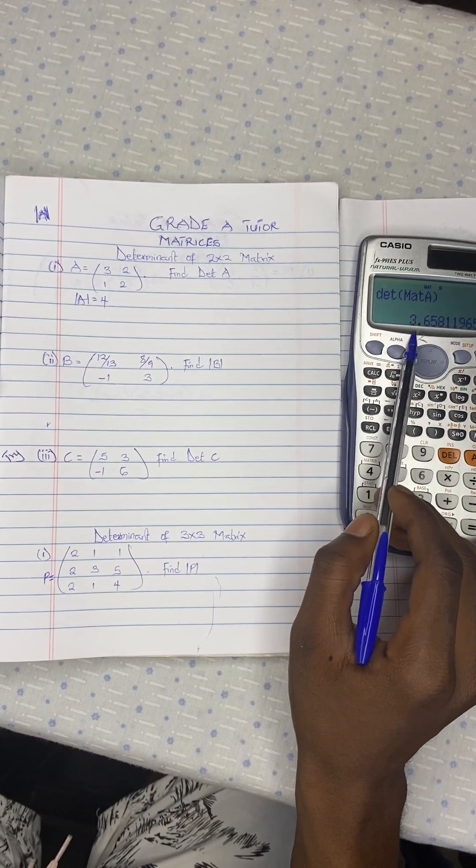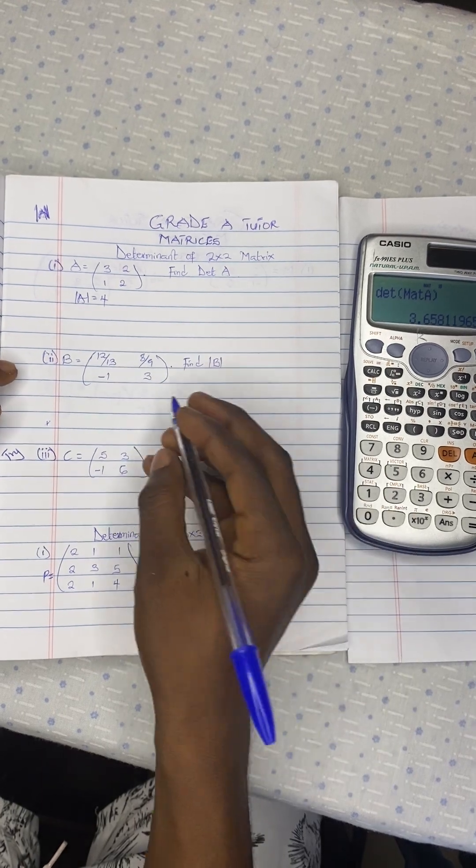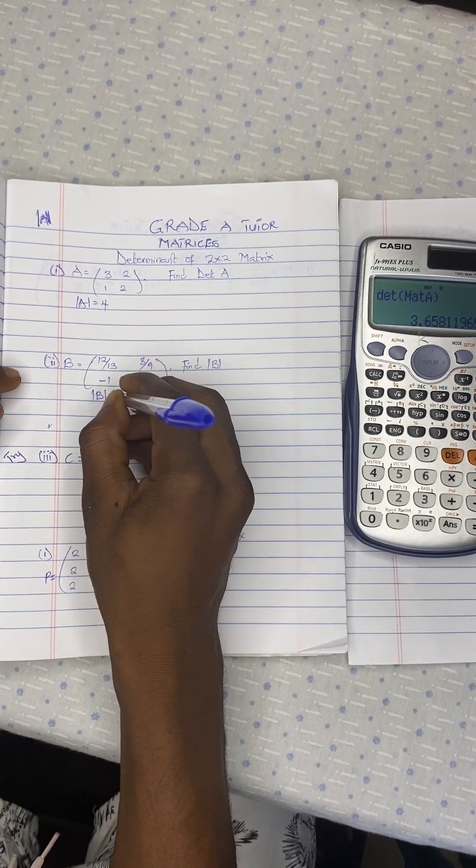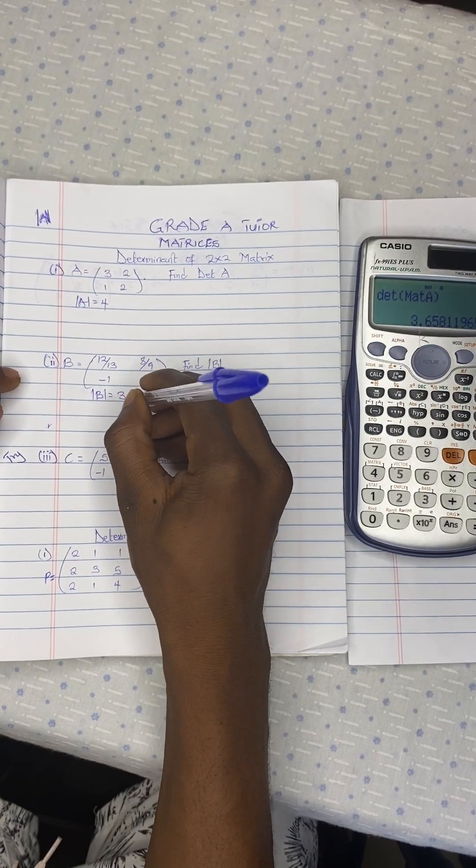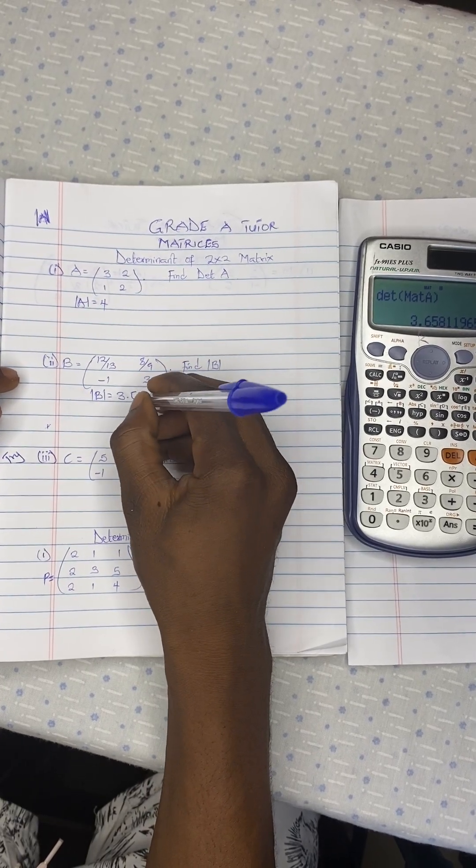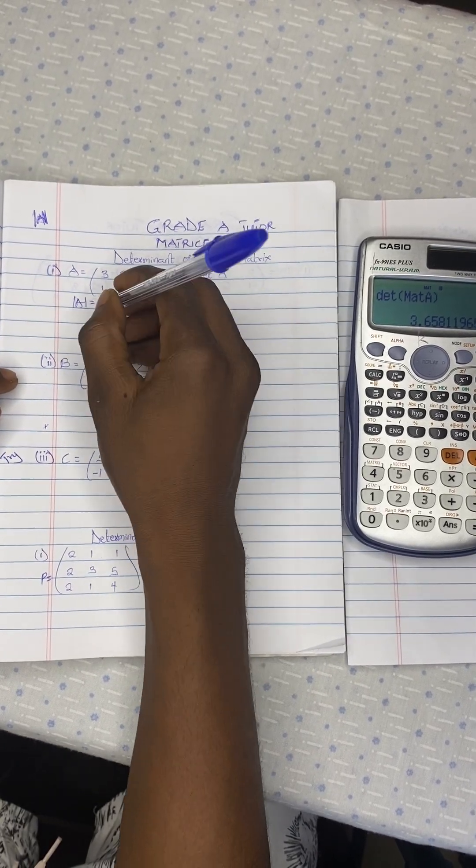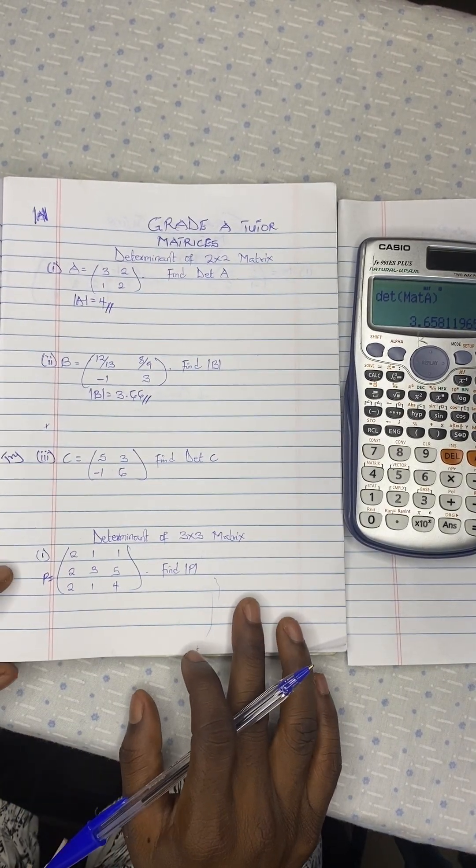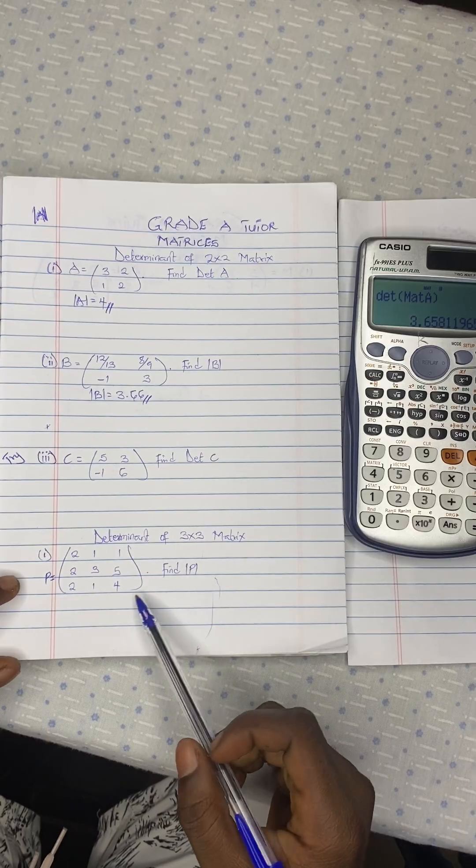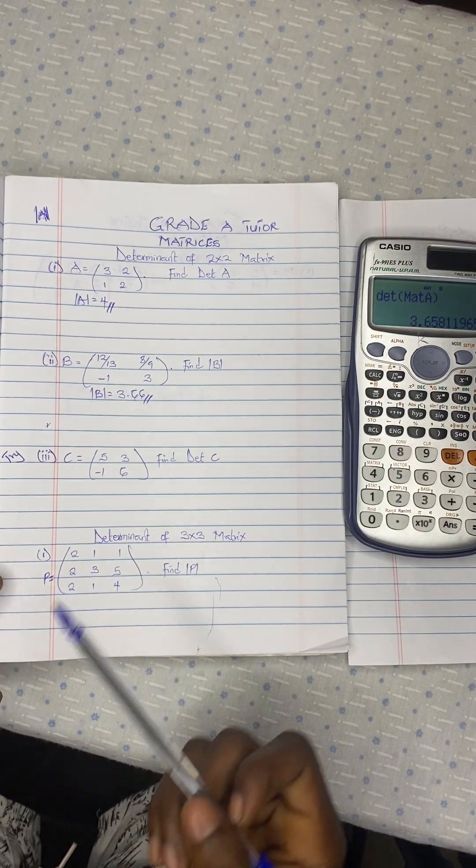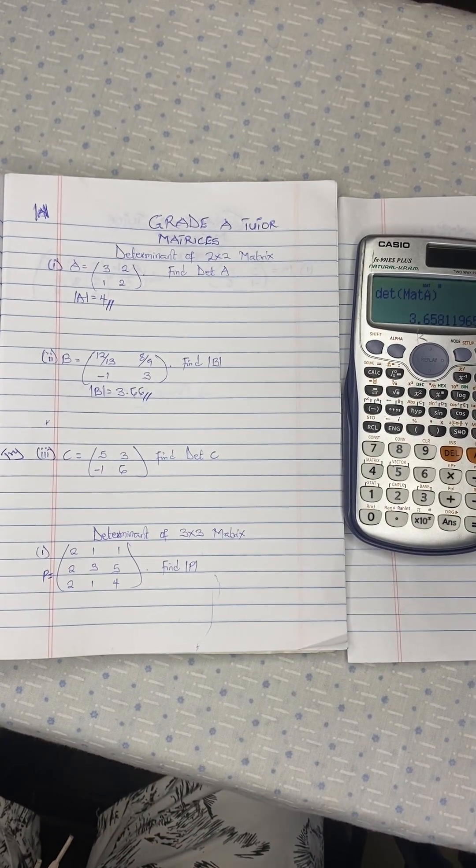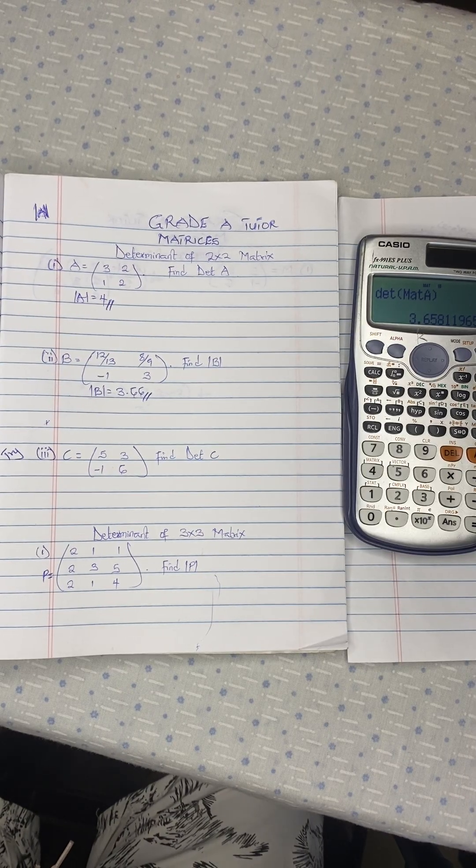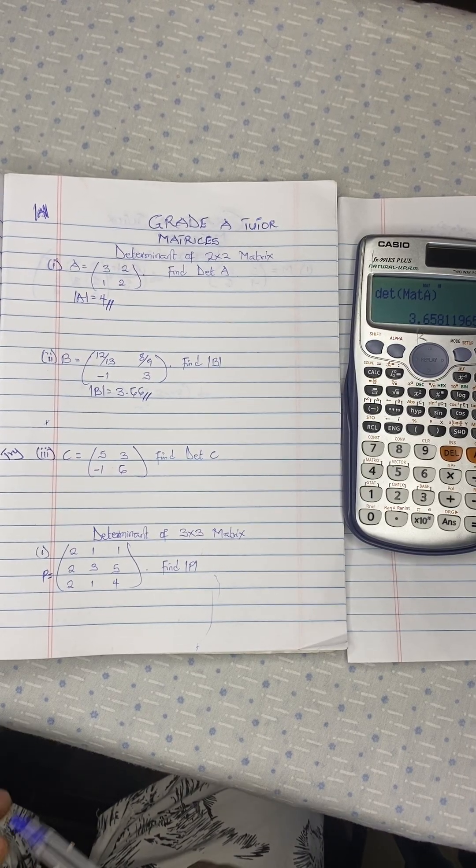So that is 3.66. So our determinant P is equal to 3.66. So try this one and put the answer at the comment section. So now that we are done with the 2 by 2 matrix, how to calculate for the determinant? So now let's move on to the determinant of 3 by 3 matrix.